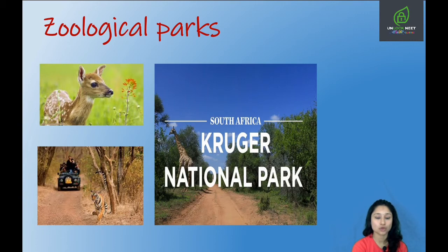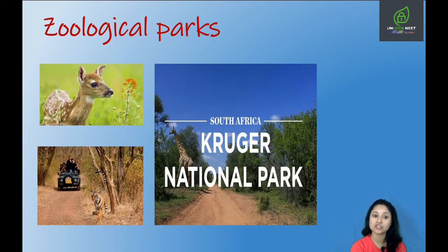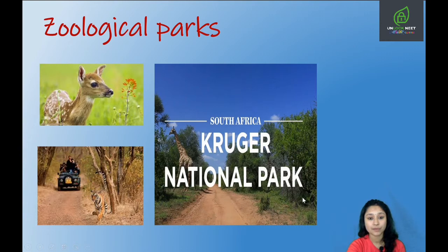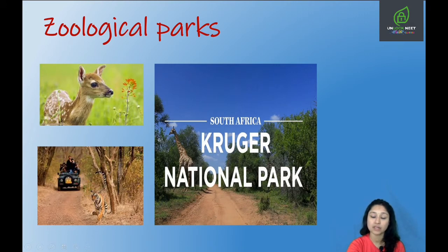Next are zoological parks, where wild animals are kept in a protected environment similar to their natural habitat. The largest zoological park is in South Africa and is called Kruger National Park. Functions of zoological parks include conservation of animals, serving as a place of tourist attraction, and providing a place for rare breeding fauna.